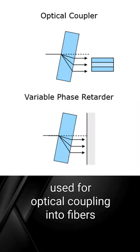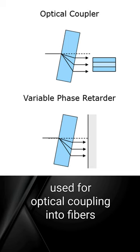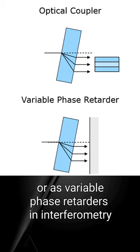Also, these beam shifters can be used for optical coupling into fibers or as variable phase retarders in interferometry.